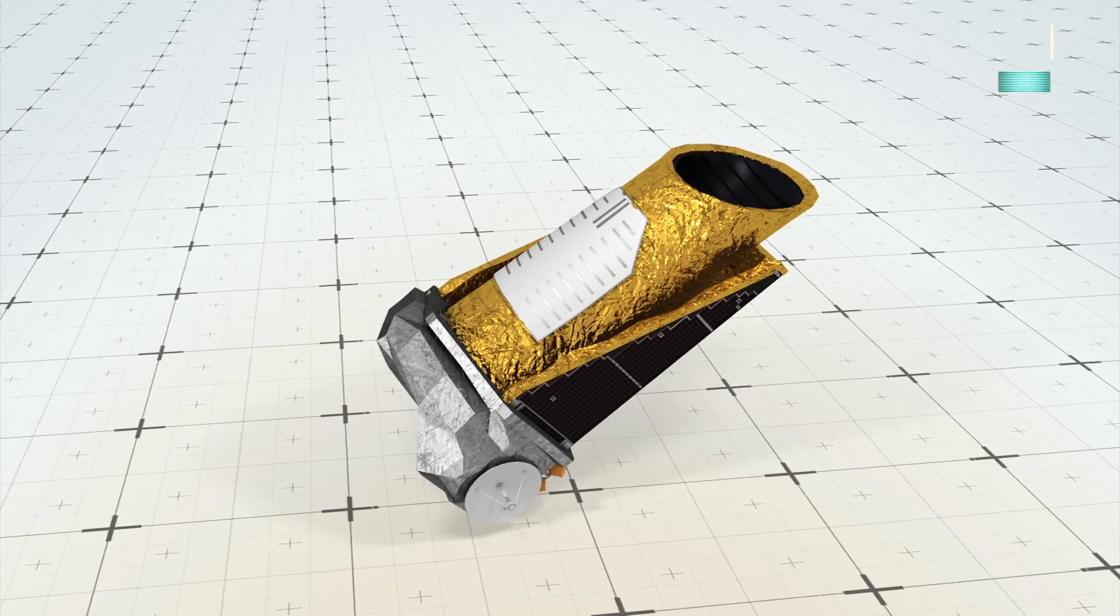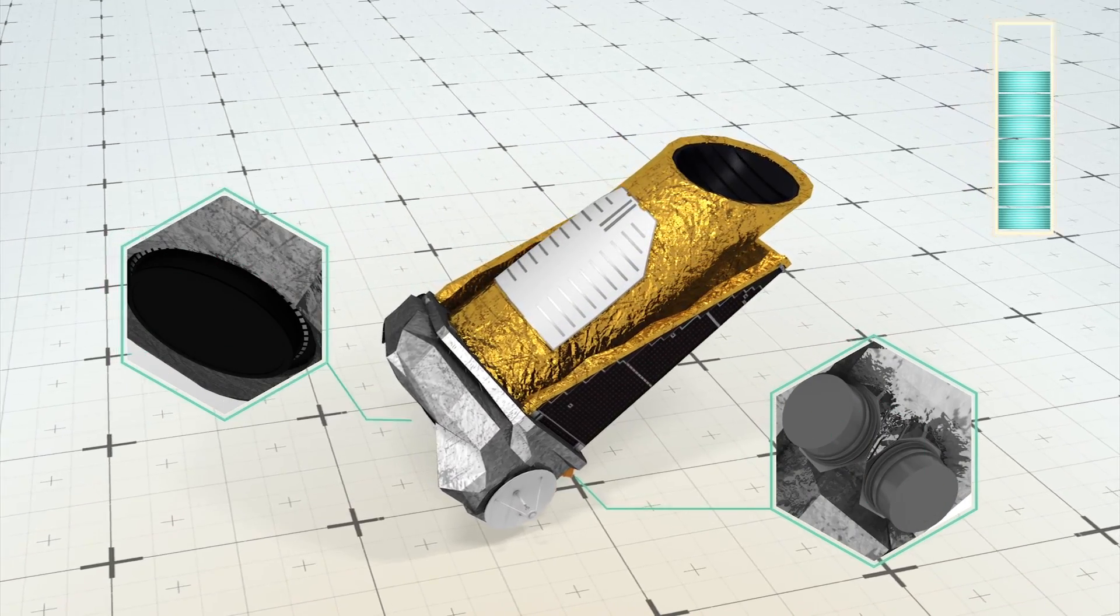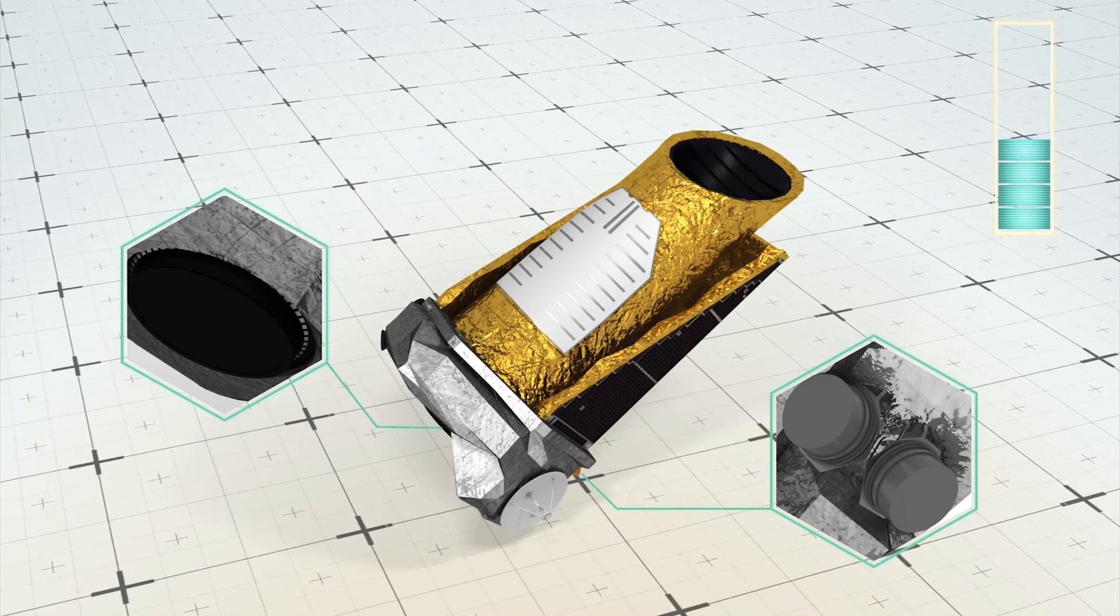In this state, the spacecraft relies on its thrusters instead of its reaction wheels, burning more of its fuel supply.